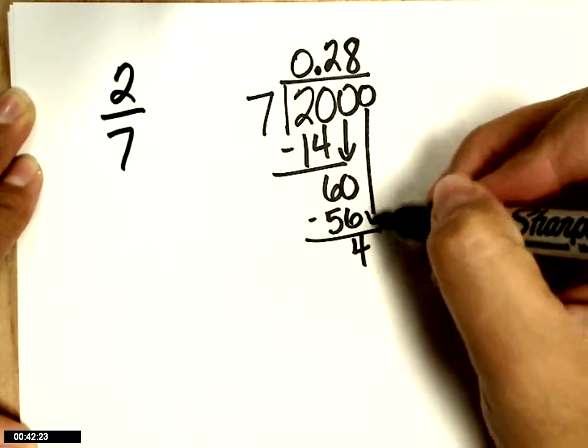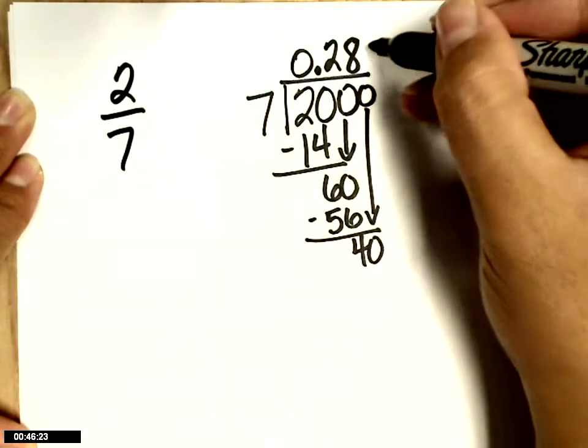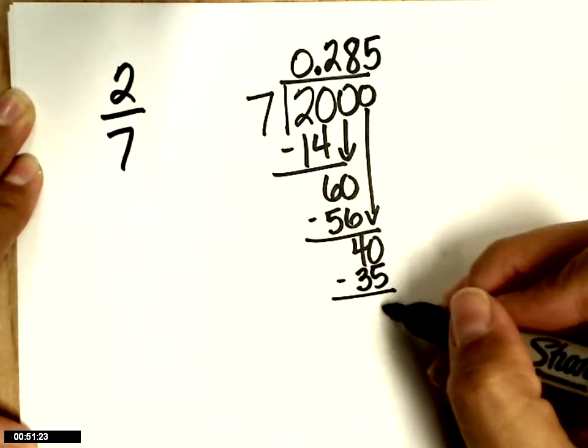Add a 0. 7 into 40? 5. 5 times - what's 7 times 5? 35. Subtract, you get 5.